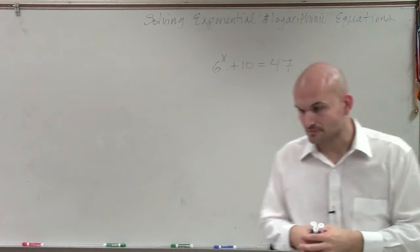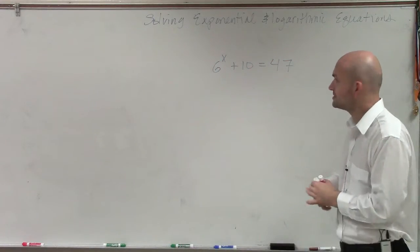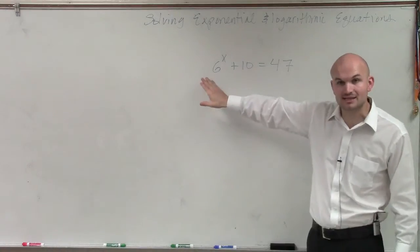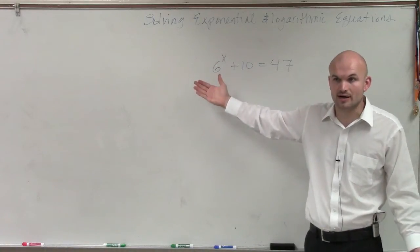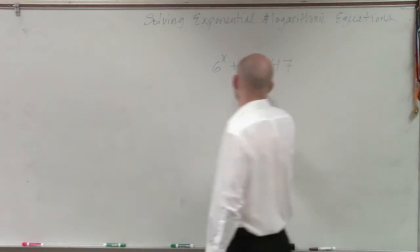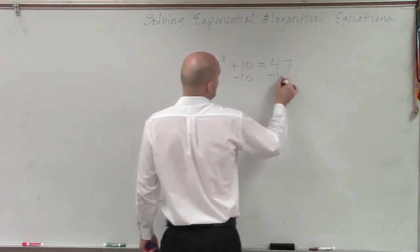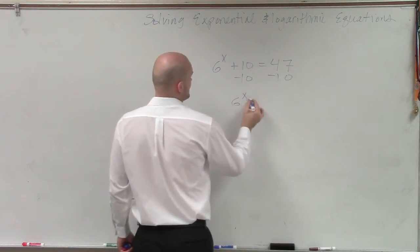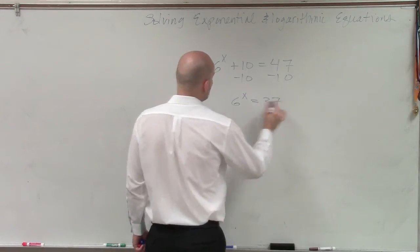So what we can do for a problem like this is we're going to have to isolate the 6 raised to the x. So we isolate, and then we want to see if we can get them to be the same basis. So I subtract 10, subtract 10, so I have 6 to the x equals 37.